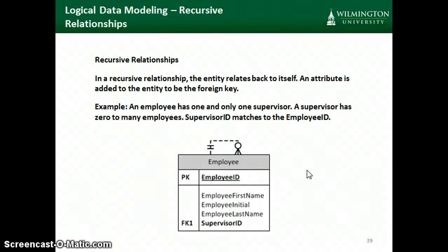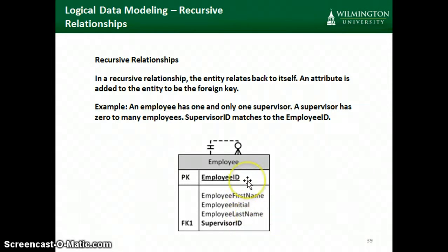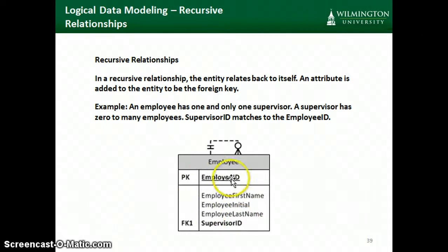Another type of relationship is what we call a recursive relationship. Initially database management systems didn't really support this type of relationship, but they're permissible now. This occurs frequently when an employee reports to a supervisor who is also an employee. The employee would have one row in the employee table and the supervisor would have one row in the employee table. The supervisor ID for the first employee would refer to the employee ID of that supervisor.